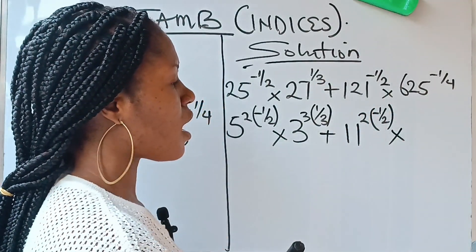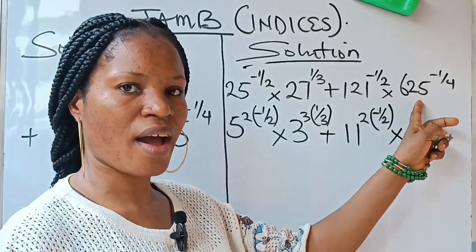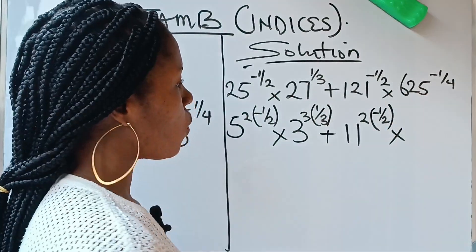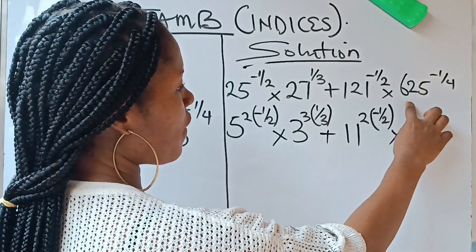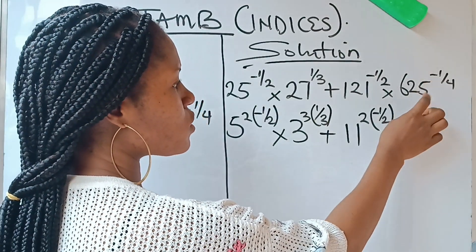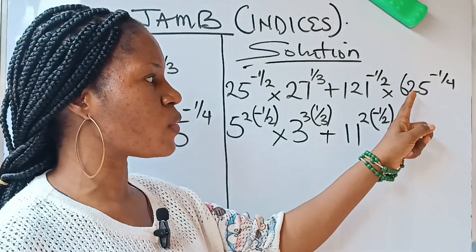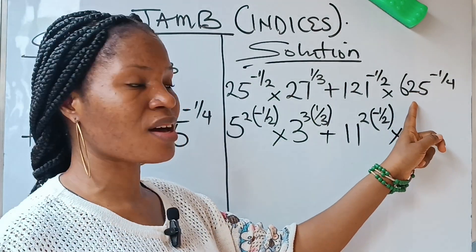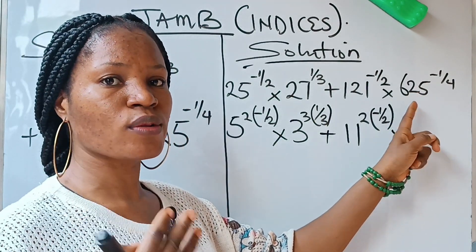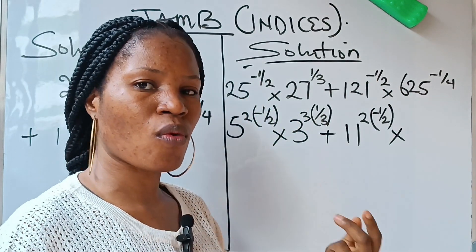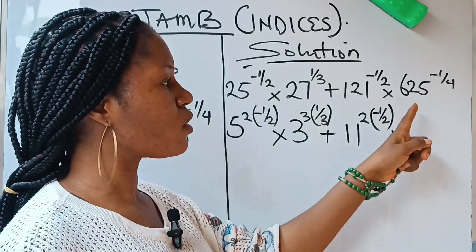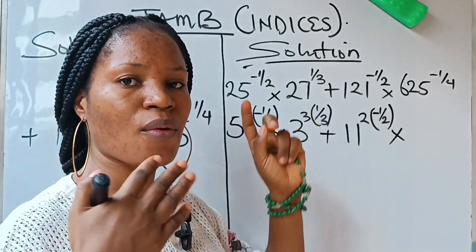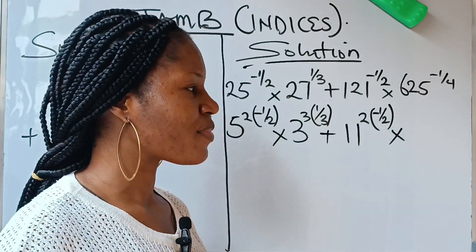Now 625 is 5 raised to the power of what? Let's find out. 5 raised to the power of what gives you 625? I know the answer is 5 raised to the power of 4, but let's work through it and see how we get 5 raised to the power of 4.